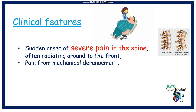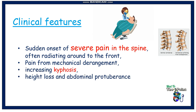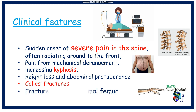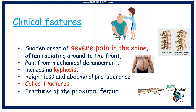Pain from mechanical derangement, increasing kyphosis, height loss, and abdominal protuberance follow crushed vertebrae. Colles fractures typically follow a fall on an outstretched arm, and fractures of the proximal femur usually occur in older individuals falling on their side or back.